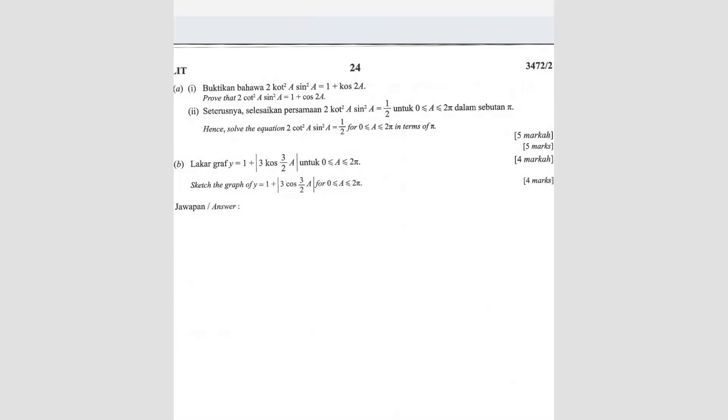Question number five. So question A, they're asking for you to prove. They're asked to prove 2 cot square A sine square A equals to 1 plus cos 2A.